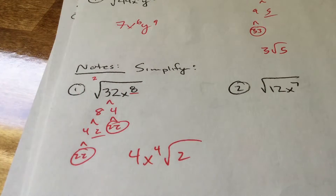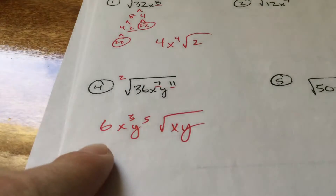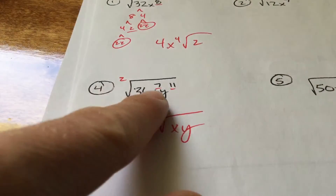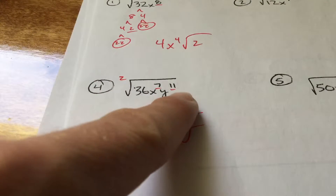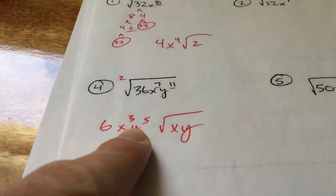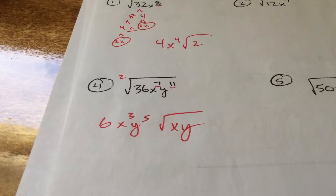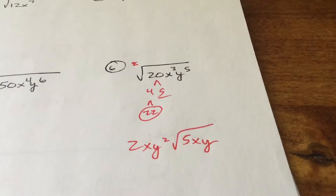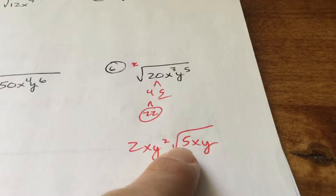2 goes into 8 four times exactly. For number 4, you take the second root of 36, which is 6. 2 goes into 7 three times with 1 left over. 2 goes into 11 five times with 1 left over — the leftovers are what stays on the inside. For the second root of 20: square root of 20 gives 2 on the outside, root 5. Leave yourself some space when writing this — put a 2, leave a space, square root of 5.